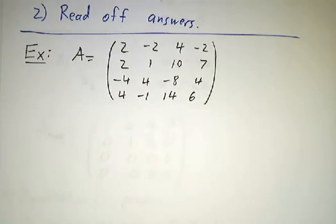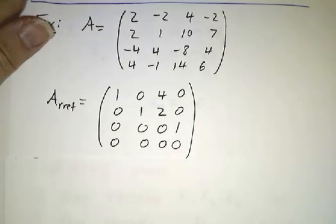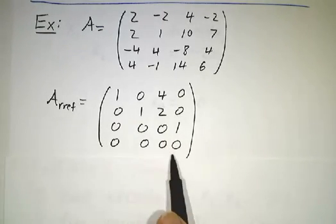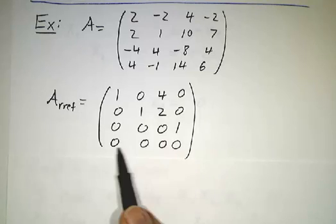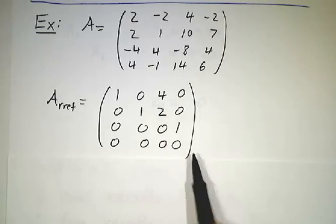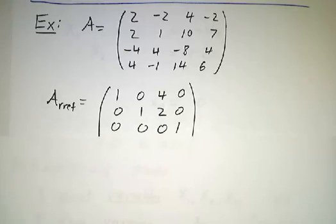So for example, this was our matrix, and in the last video we computed that this was the reduced row echelon form. Great. So now we've got four equations in four unknowns. One of them is pretty silly. It's 0x1 plus 0x2 plus 0x3 plus 0x4 equals 0. But the other three give us real information.